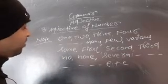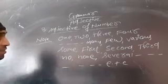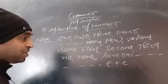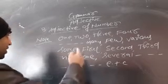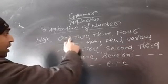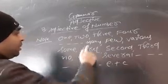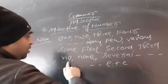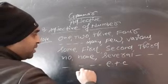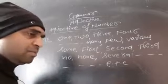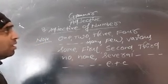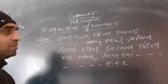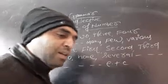We are talking about adjective of number, so these are the words included: one, two, three, four, many, few, various, some, first, second, third, no, none, several, and etc. These all come into adjective of number. I hope you must have understood it now.